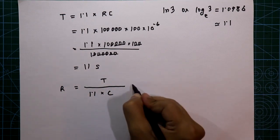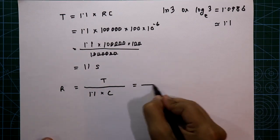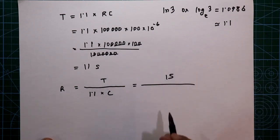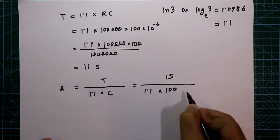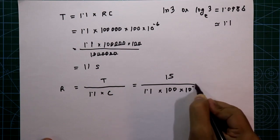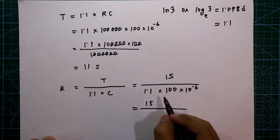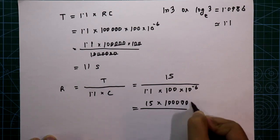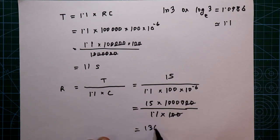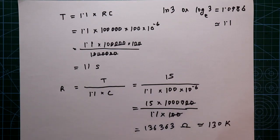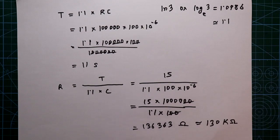For example, if you want a 15-second timer with a 100 microfarad capacitor, then R = 15 / (1.1 × 100×10⁻⁶) ≈ 136,363 ohms, which is approximately 130 kilohms. You can also get this exact value using a potentiometer.